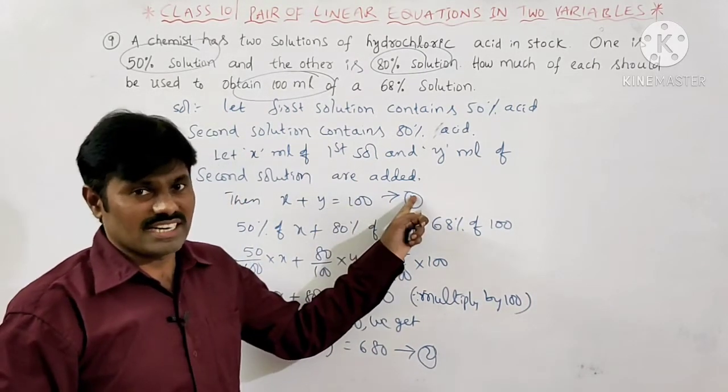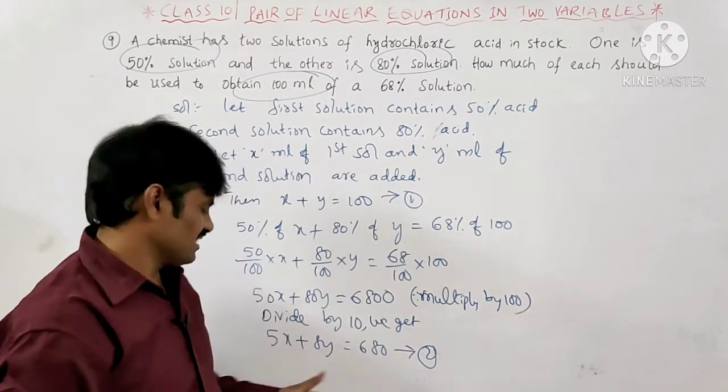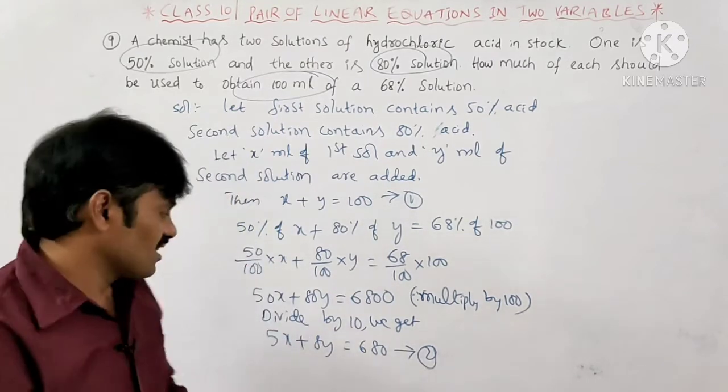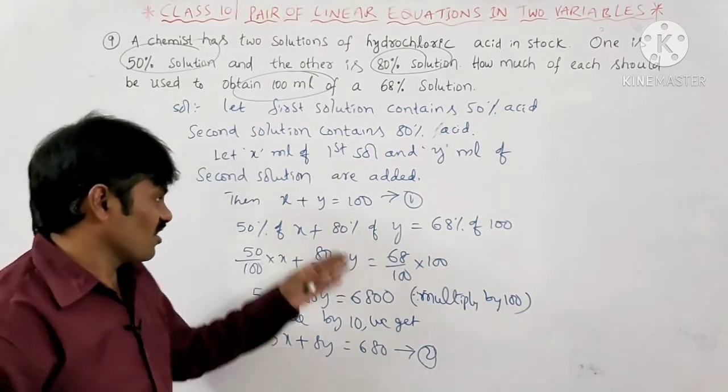So we have two equations: equation 1 is X plus Y equals 100, and equation 2 is 5X plus 8Y equals 680.